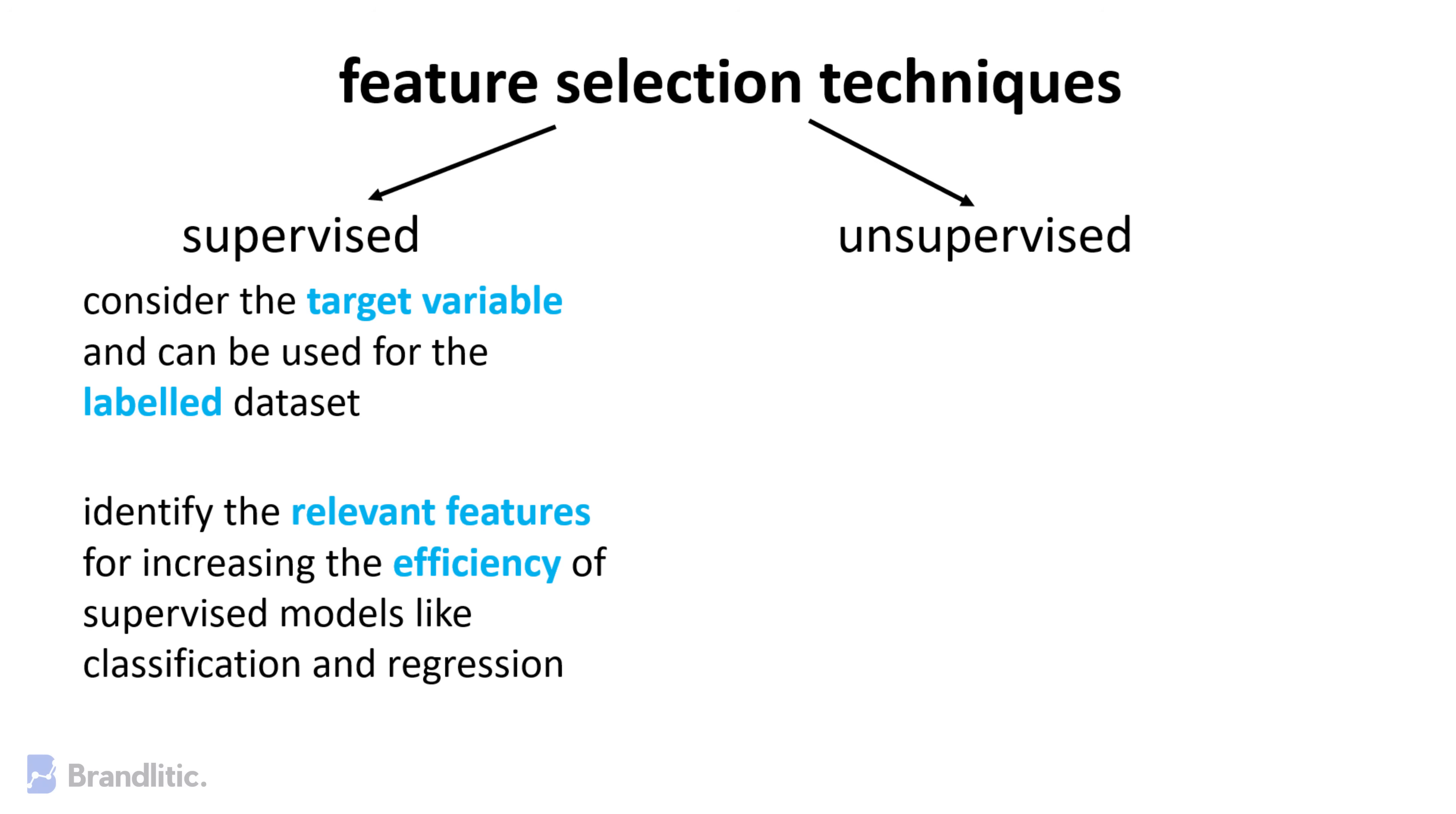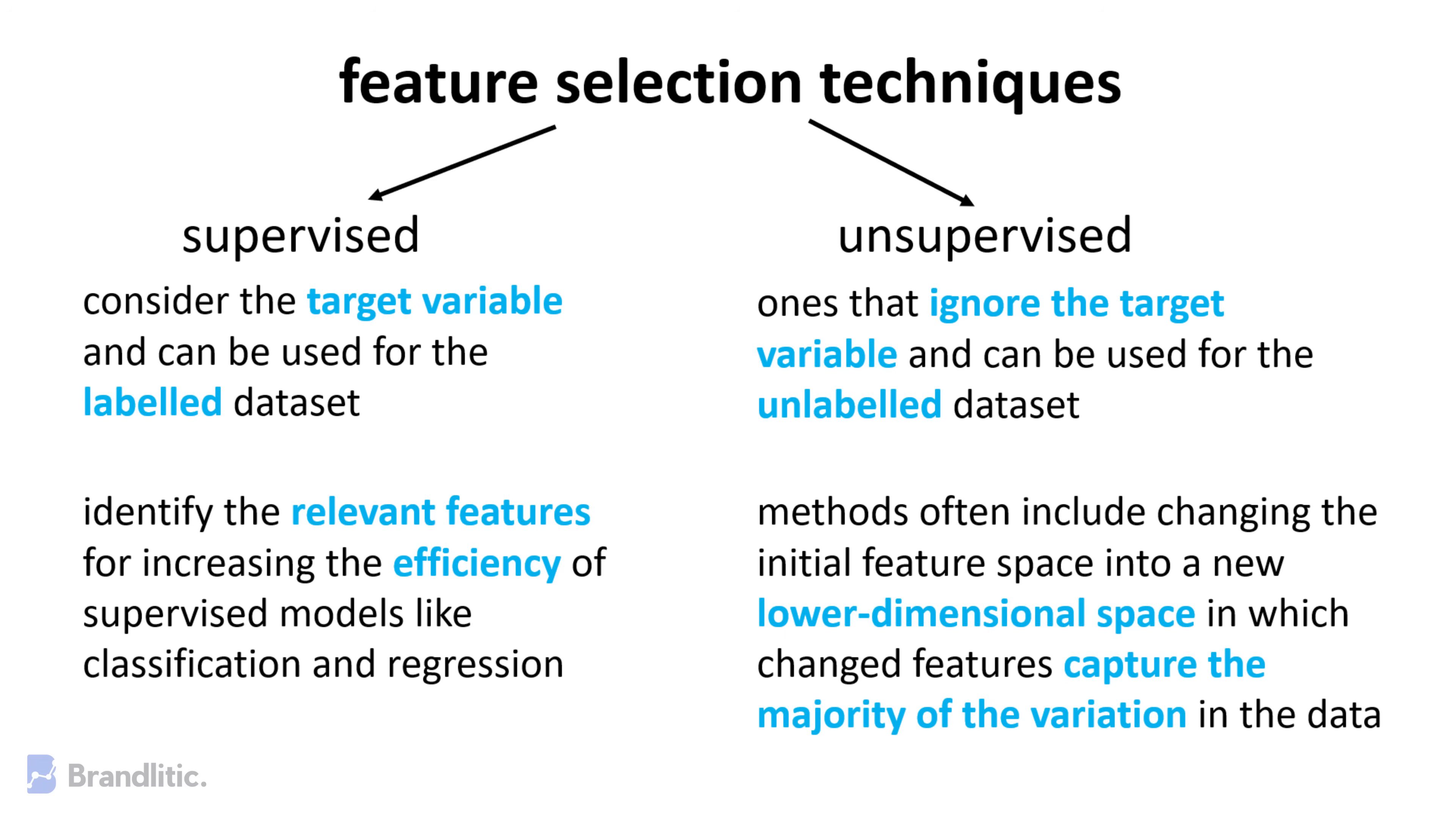On the other hand, unsupervised techniques are the ones that ignore the target variable and can be used for unlabeled dataset. In unsupervised techniques, methods often include changing the initial feature space into new lower-dimensional space in which the changed features capture the majority of the variation in the data.